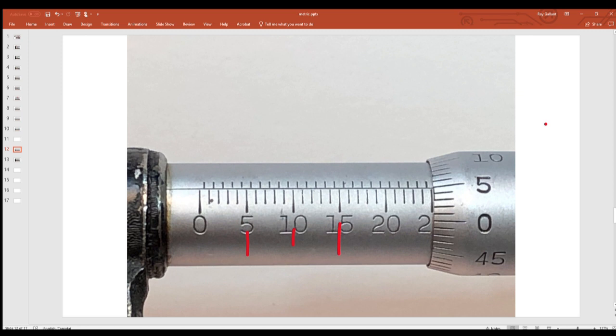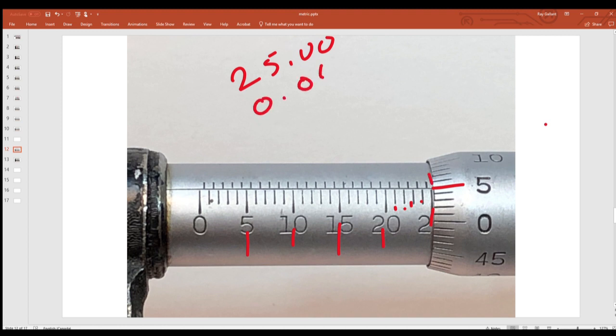5, 10, 15, 20, 21, 22, 23, 24, 25, 25 millimeter, and we can see that we're at the 5 mark. There's no 50 mark here, 0.05, so it's 25.05 millimeter.